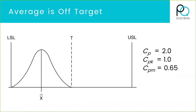Earlier in this webinar I mentioned the other indices that begin with the letter P and haven't covered any of those. All those indices that begin with the letter P follow the same logic as CP, CR, CPU, CPL, and CPK — except they use the other standard deviation, the one you would typically get from Excel. If you're using software like our SQC Pack, it'll do both for you. If you're doing it all in Excel, you have to calculate two different standard deviations to get a CPK as well as that PPK statistic.